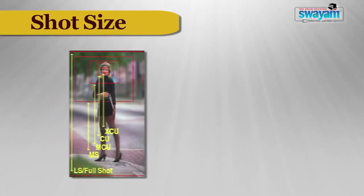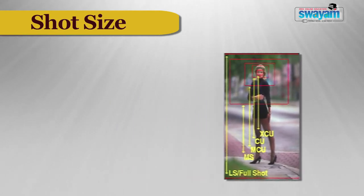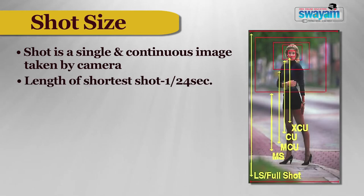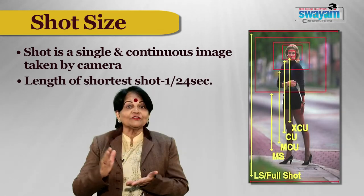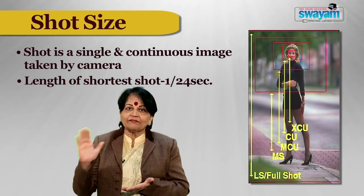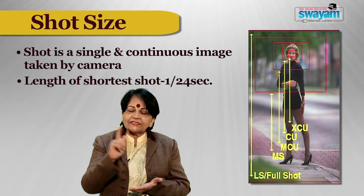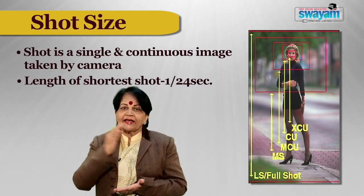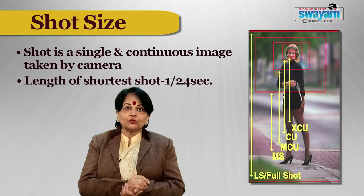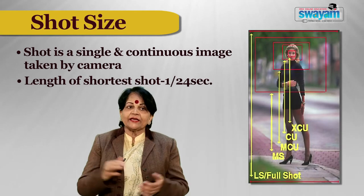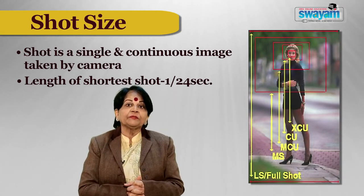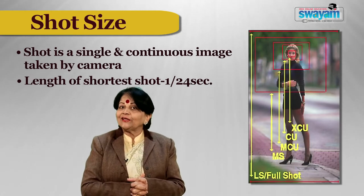A shot is basically the visual element in a video program production — a single, continuous image taken by a camera. It can be as short as 1/25th of a second, the length of a single video frame, or as long as an entire program. However, we never use these two extreme lengths. In one second, 25 frames play in such a way that it looks like a moving video. For variety, we always recommend using three cameras from the sides and different angles, as one long shot is not very desirable. We generally assemble a number of different shots together into a sequence.